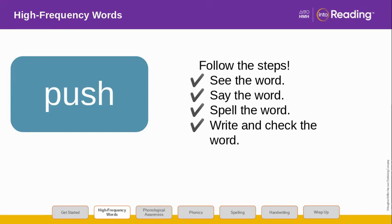Look at the letters in the word. Let's spell it. P-U-S-H. In this word, the letter U stands for the sound OO. The letters S-H stand for the sound SH. Blend with me. P-U-S-H. Push. Now write the word push. Try to write it without looking. Then check it.